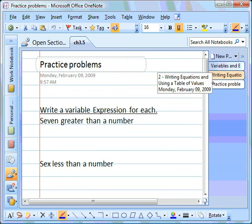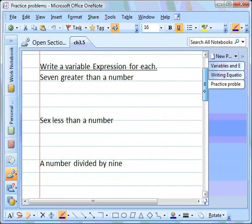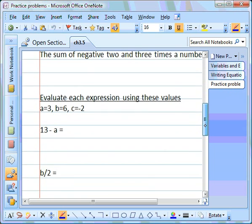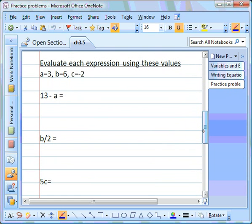Lastly, we need to look at, if we substitute numbers into an equation, being able to solve for that equation. You will have some like this on your assignments. Up in the directions, it tells us that we are supposed to use 3 for a, 6 for b, and negative 2 for c. So 13 minus a. We'd rewrite that equation, putting the value of a in. The value of a is 3. And then we solve. 13 minus 3 is 10.